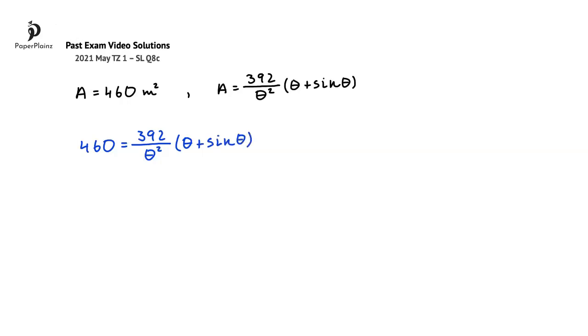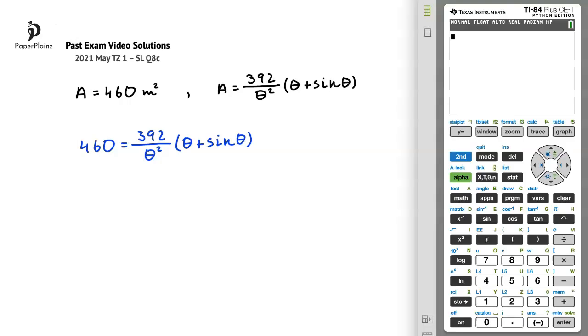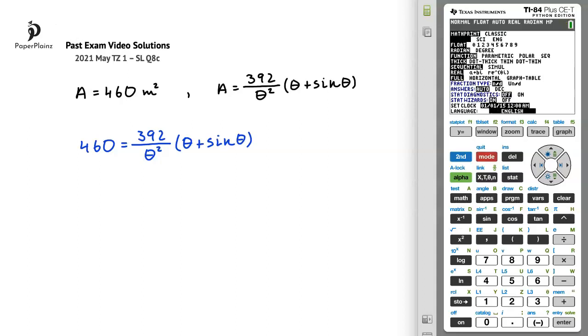From here we'll use our calculator to get the solution. There are a few things we have to be careful with when we are looking for the solution. First, since in the question theta is given in radians, I will press the mode button on the calculator to check if the angle setting is in radians. I can see on the fourth line that it is.